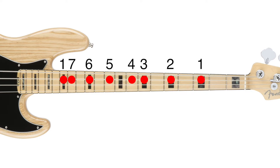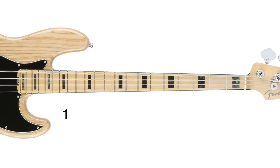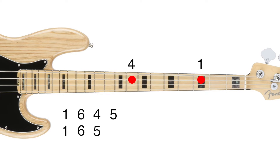The instrument this system is most easily applied to is the bass guitar. Here is a sample chord chart: 1, 6, 4, 5, 1, 6, 5. We find those notes on the bass by using our major scale pattern. We will go from 1 to 6, then to 4, then to 5, then back to 1, then to 6 again, and then back to the 5.